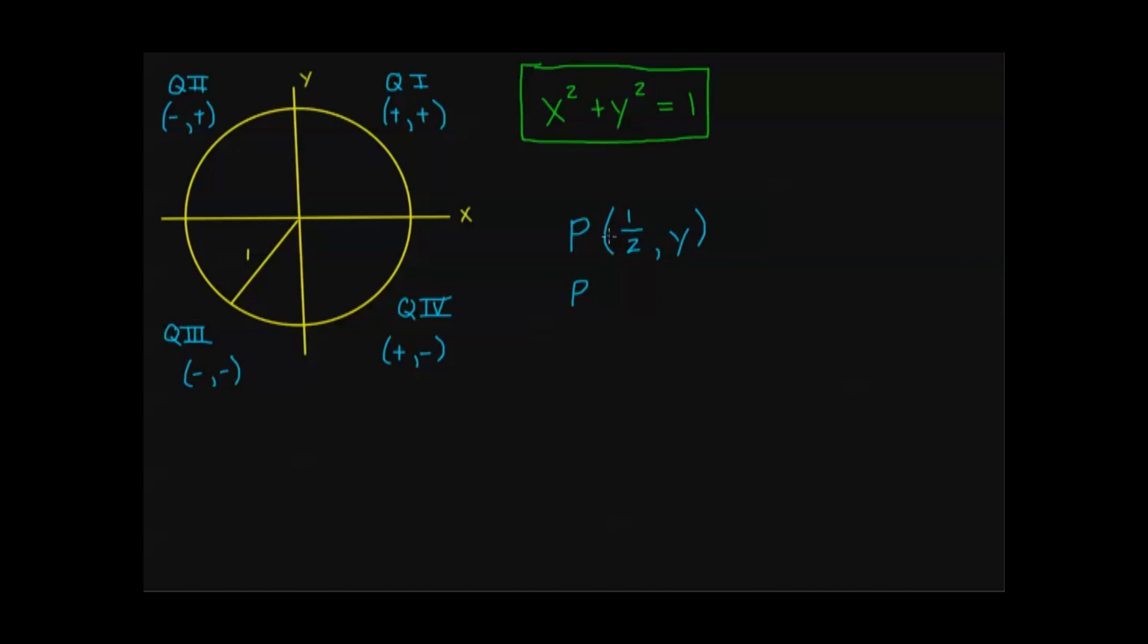First of all, let me just be clear here for those of you who can't hear very well. p (one-half, y) is on the unit circle. Let's say I also know that p is in quadrant 1. And I want to find y.